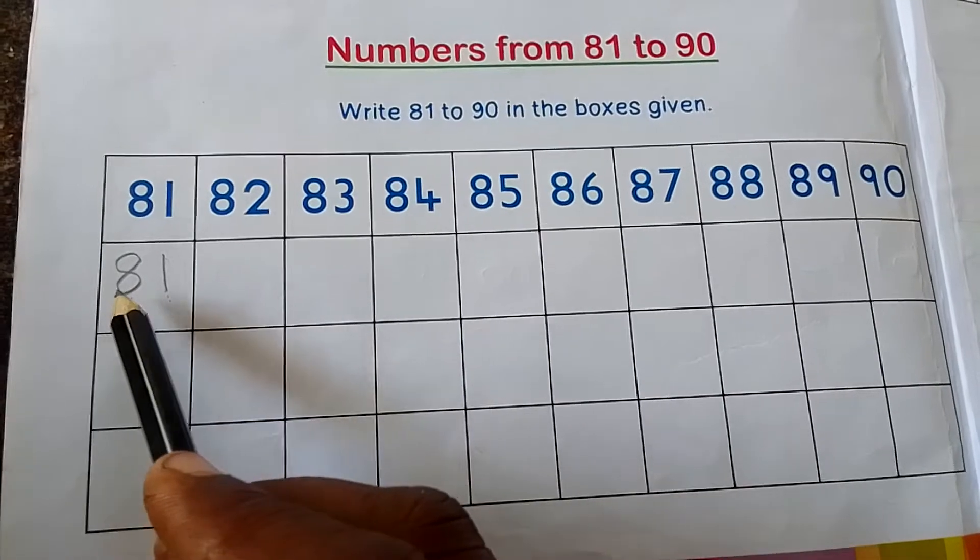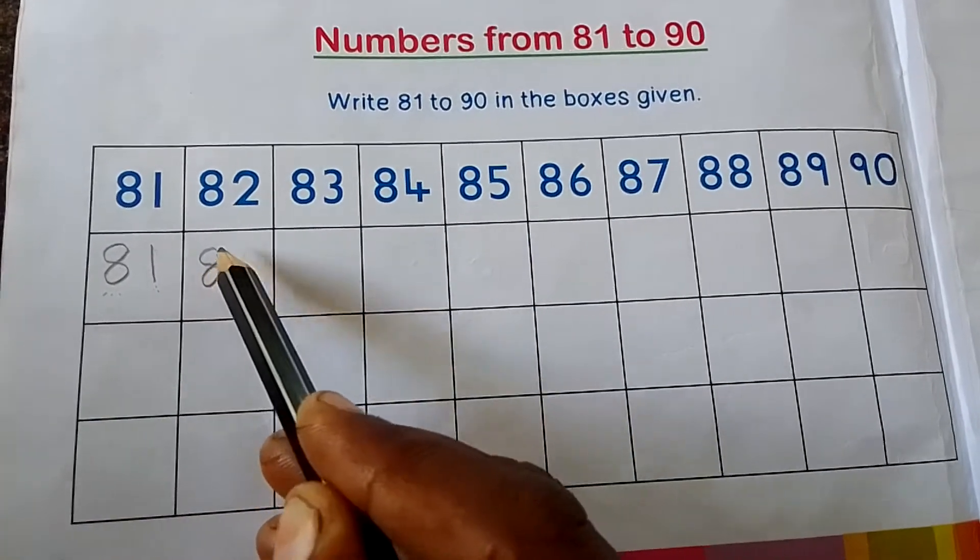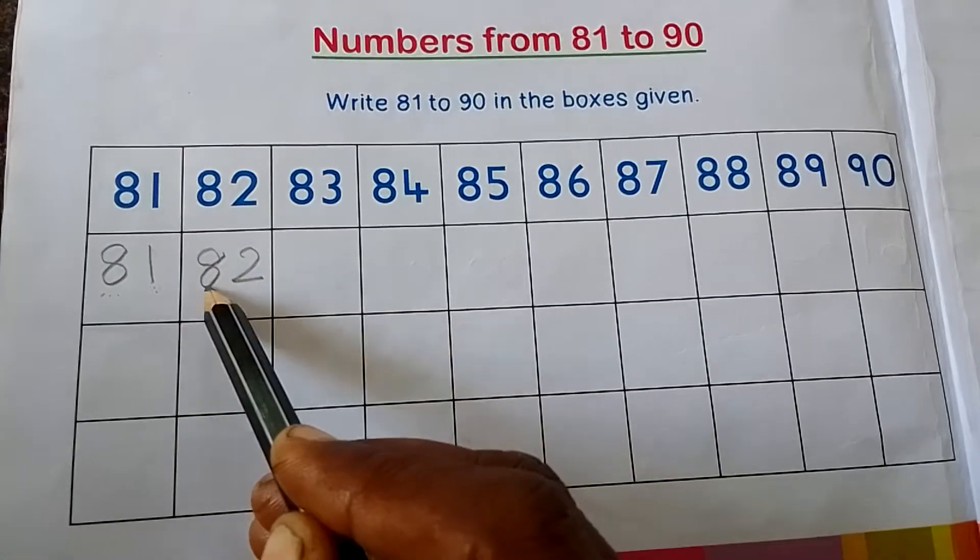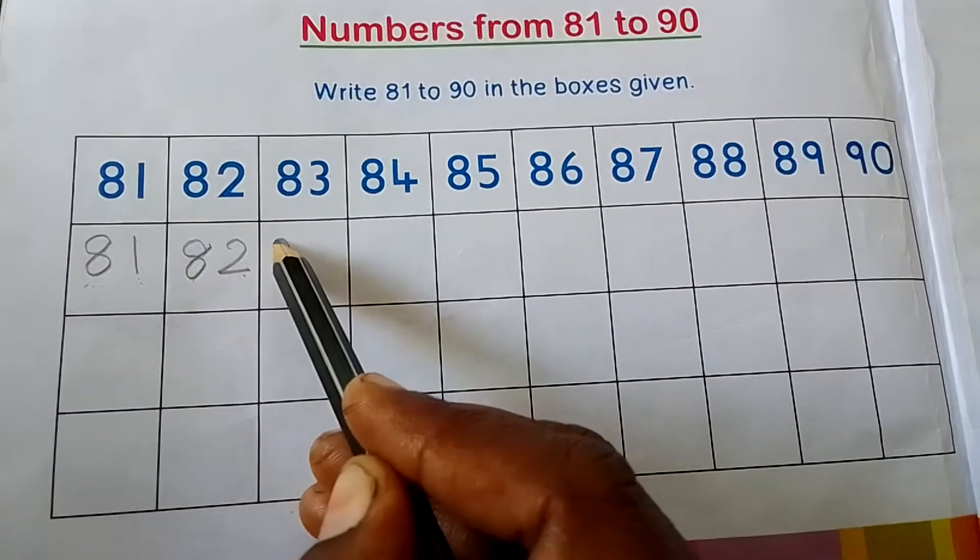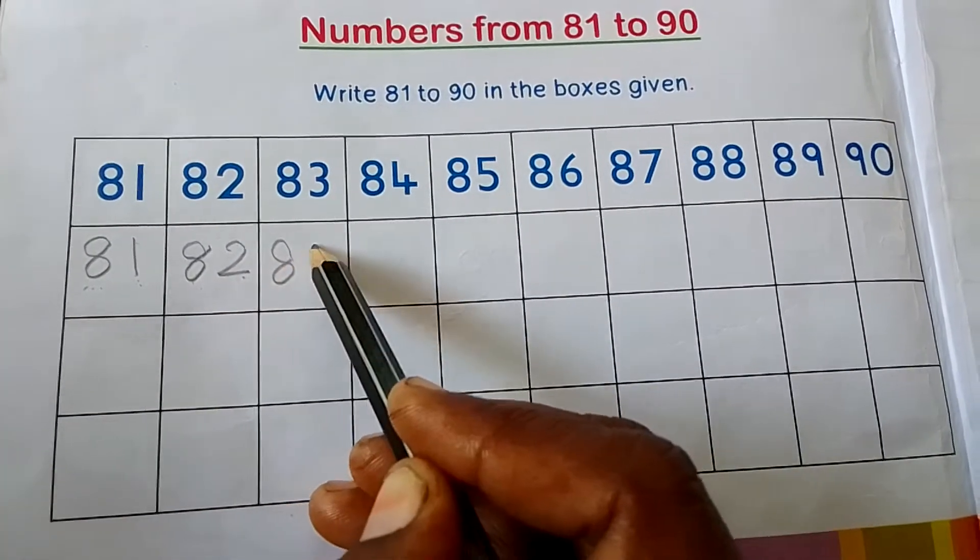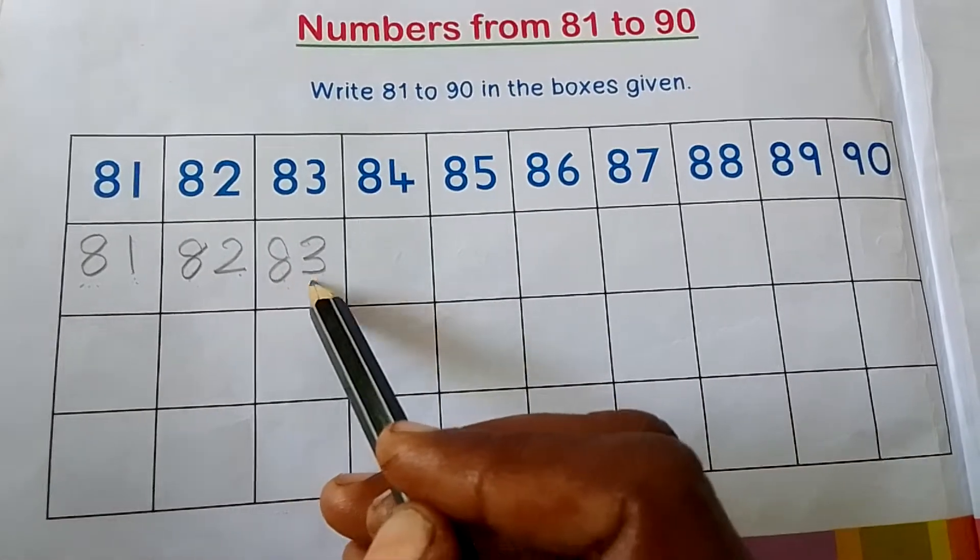81, then 82. First we write 8, then we write 2. This is 82, 82, then 83. First we write 8, 3, 83, 83.